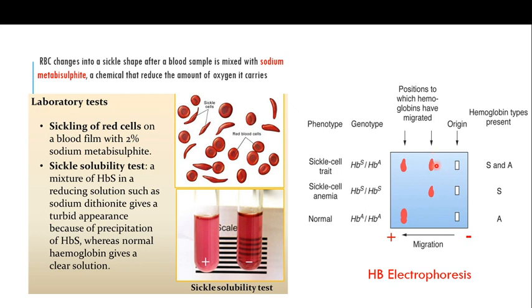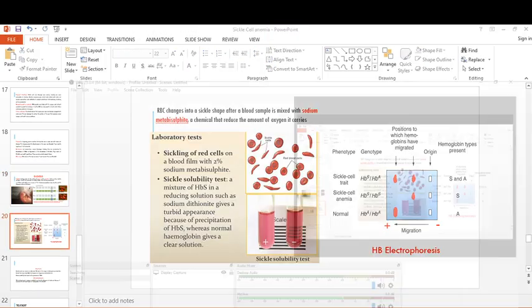One band represents the mutant beta-globin chain where glutamic acid has been replaced by valine, and the normal beta-globin chain gives a band at the farther position. A band only at the far position means the person is normal. A band only at the near position means the person is a sickle cell anemia patient. Two bands — one at each position — indicate sickle cell trait. If you like the video, please subscribe to my channel, hit the like button, and share it with your friends.